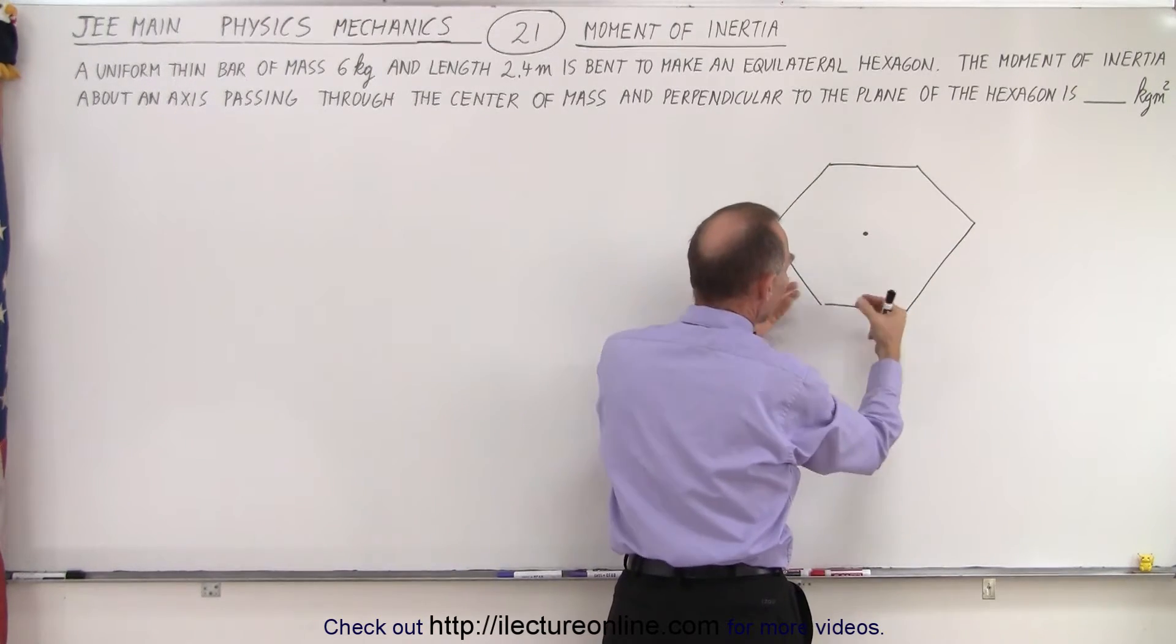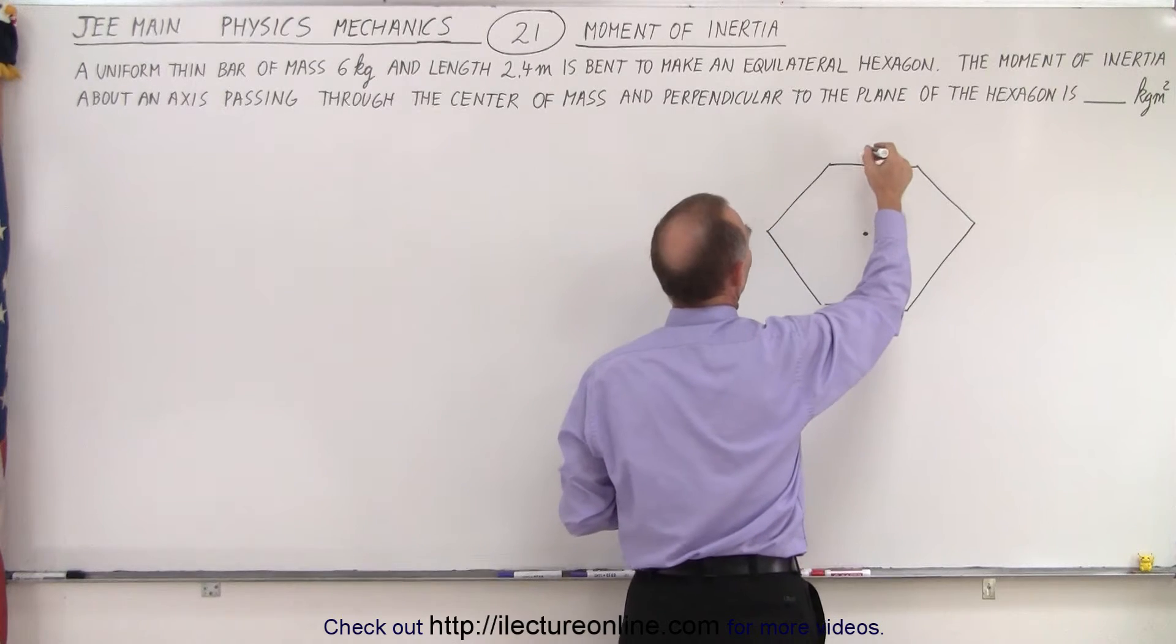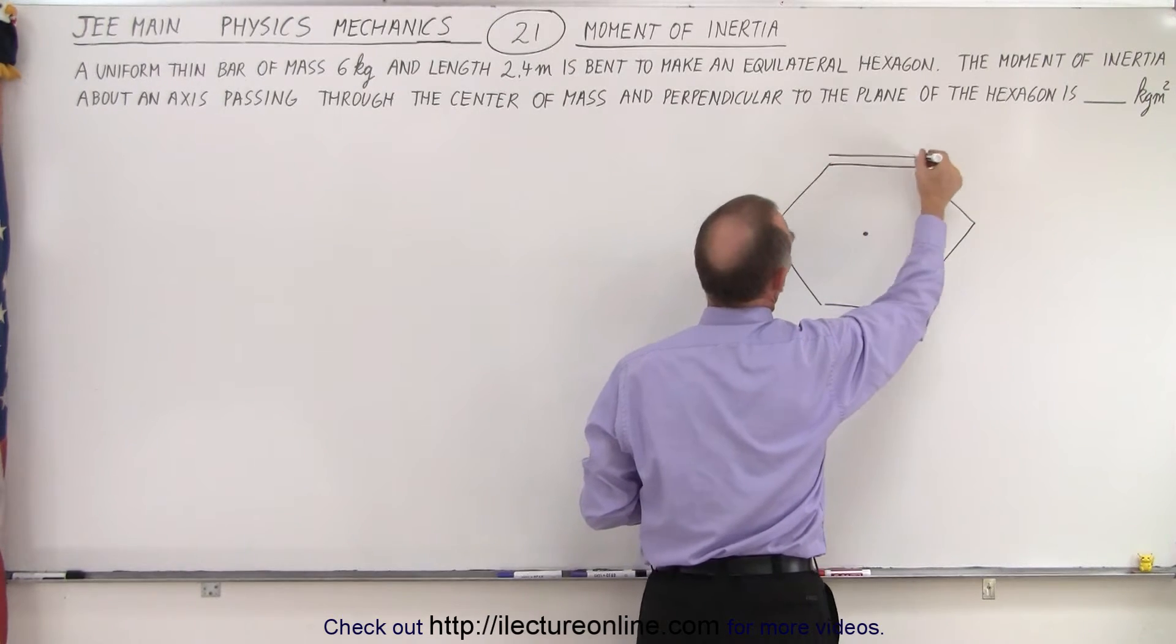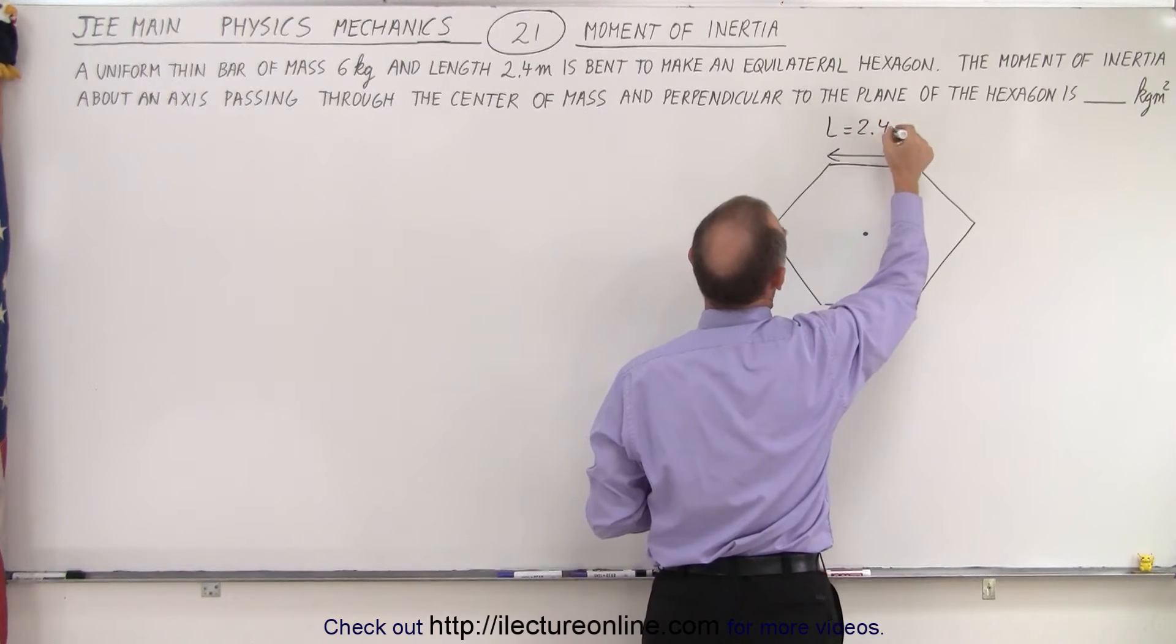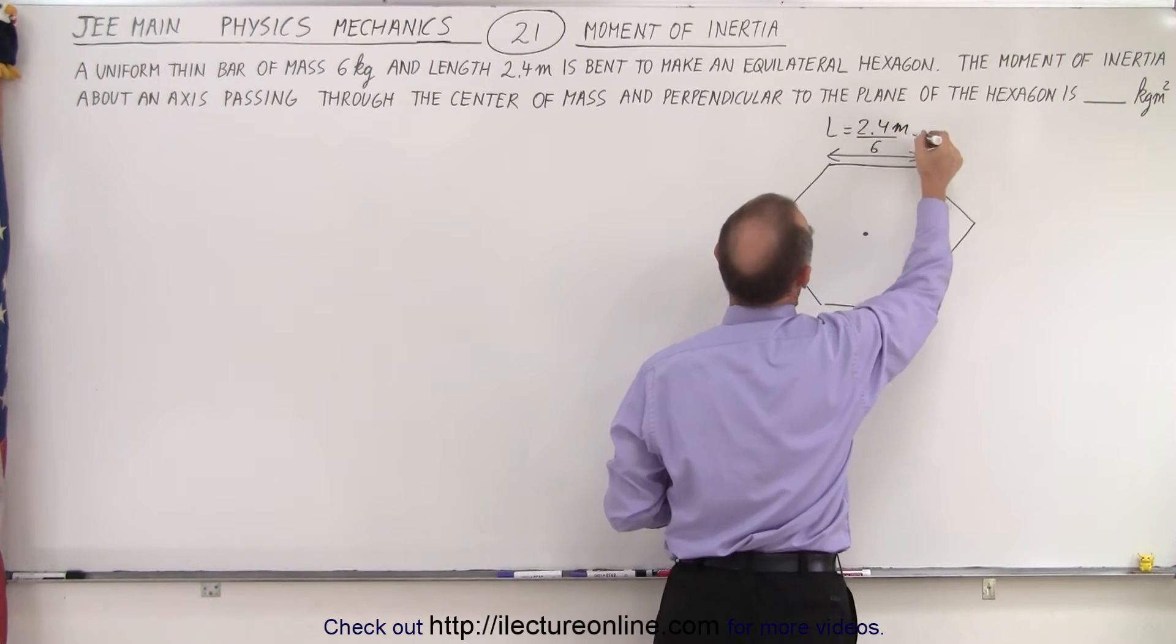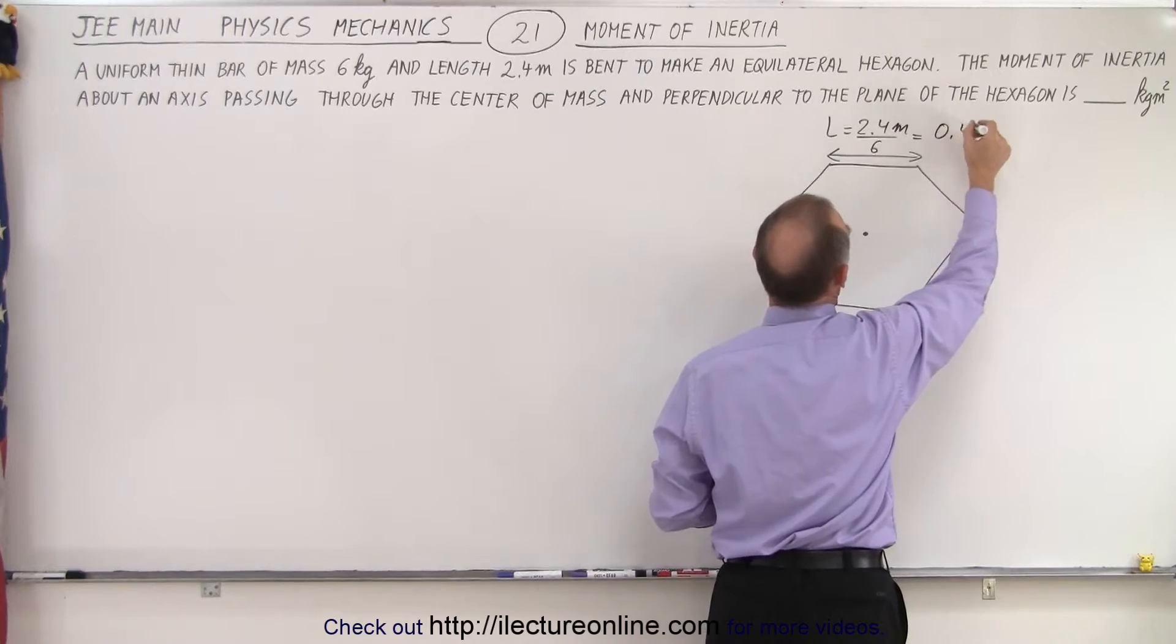So essentially we bent it into this shape, and so that means that the length of each side, this distance right here, this length would be equal to 2.4 meters divided by 6 which is equal to 0.4 meters.